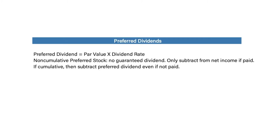To calculate the preferred dividend amount, we take the par value of the preferred stock and multiply it by the dividend rate. Non-cumulative preferred stock means there's no guaranteed dividend each year — if the company doesn't pay a dividend one year, it's not required to pay it in the next, so we only subtract this amount from net income if actually paid. If it's cumulative preferred stock, we subtract the preferred dividends even if not paid, because they're required to be paid eventually.